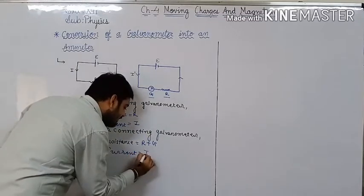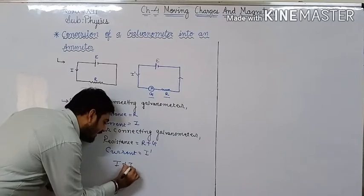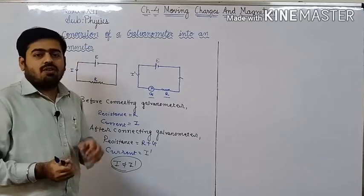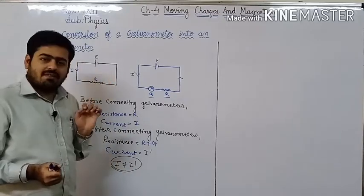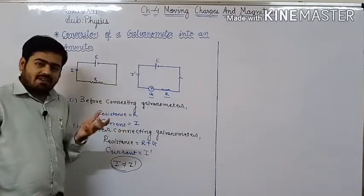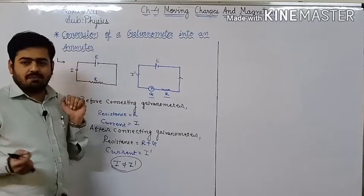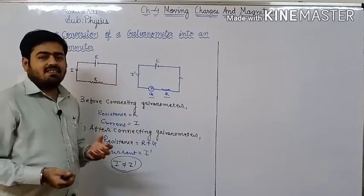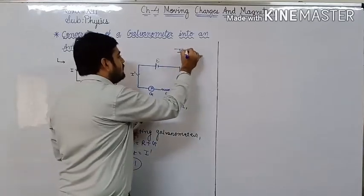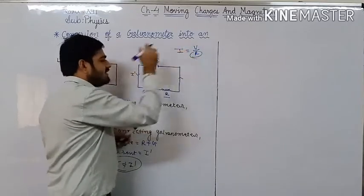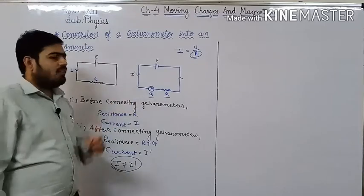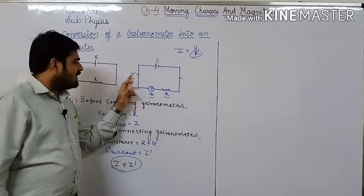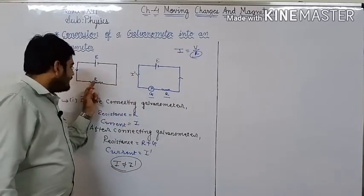Here I is not equal to I dash. This is a condition because according to Ohm's law, V = IR, so I = V/R. If resistance is different, then amount of current flowing through the circuit will be different. As resistance increases, current flowing through the circuit decreases, and we cannot measure accurate value of current flowing through the circuit.